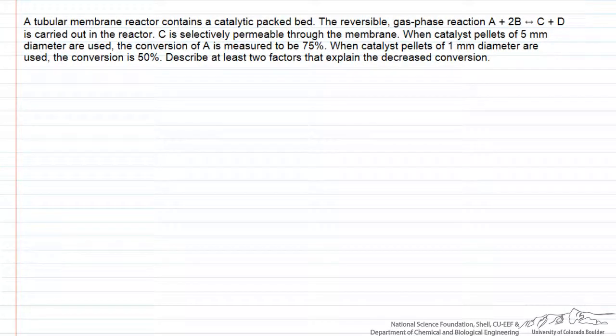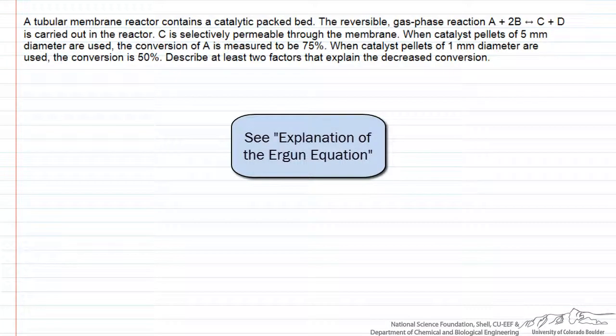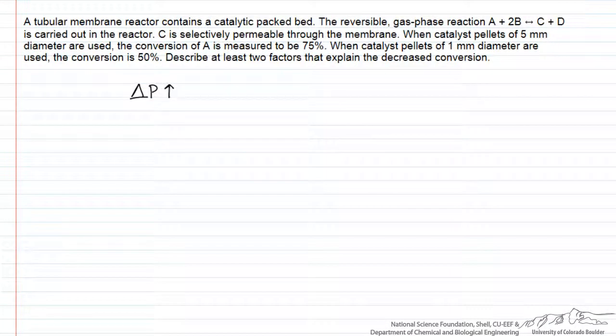Depending on what you assume in this problem, there can be multiple reasonable answers. We'll describe at least three factors that could explain the decreased conversion. All of them are related to the fact that when you decrease the particle diameter, what you expect mainly to happen is that through the Ergun equation the pressure drop will go up, and therefore the pressure at the outlet of the reactor and throughout the reactor, except right at the inlet, will go down. So if we're operating at lower pressure, that can have a number of consequences.